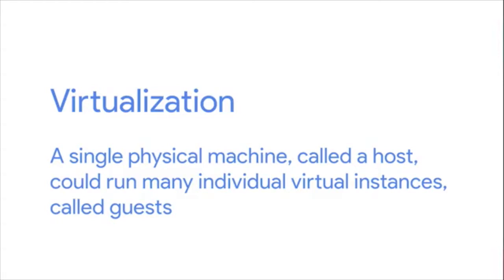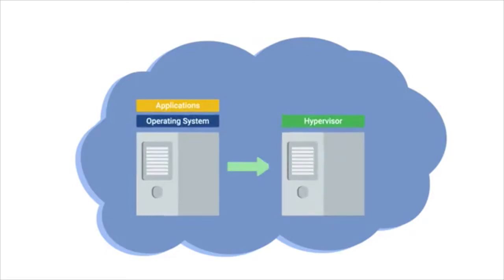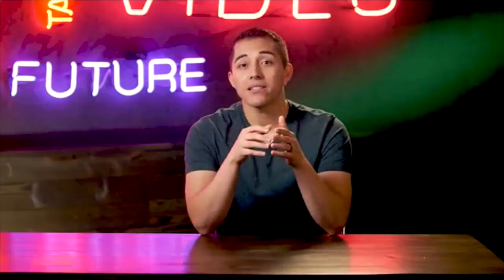Hardware virtualization is a core concept of how cloud computing technologies work. It allows the concept of a physical machine and a logical machine to be abstracted away from each other. With virtualization, a single physical machine called a host could run many individual virtual instances called guests. Hardware virtualization platforms employ what's called a hypervisor — a piece of software that runs and manages virtual machines while offering guests a virtual operating platform that's indistinguishable from actual hardware. A single physical computer can act as the host for many independent virtual instances, each running their own independent operating system.